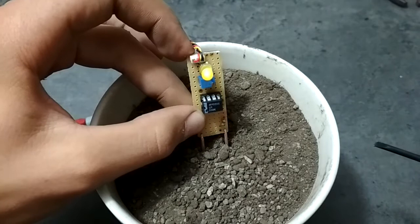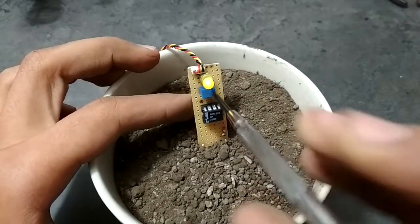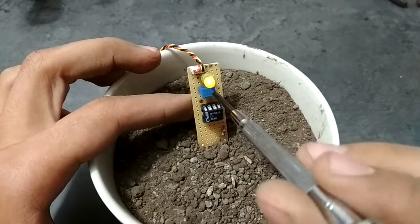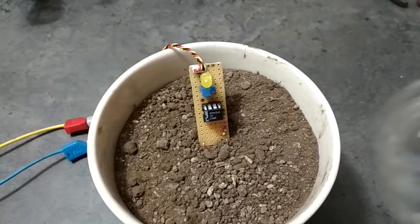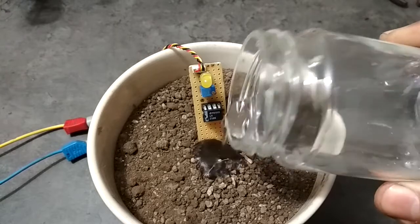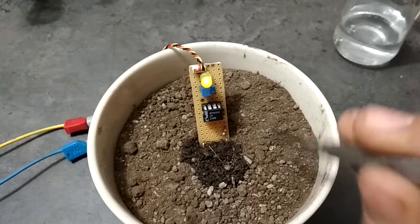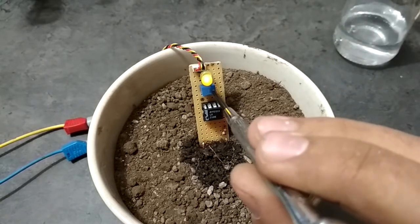By putting the sensor in dirt and turning the potentiometer, you can get to the point where the LED changes state. By pouring some water on the dirt, you can see that the LED turns on. Now when I turn the potentiometer again, it turns off.